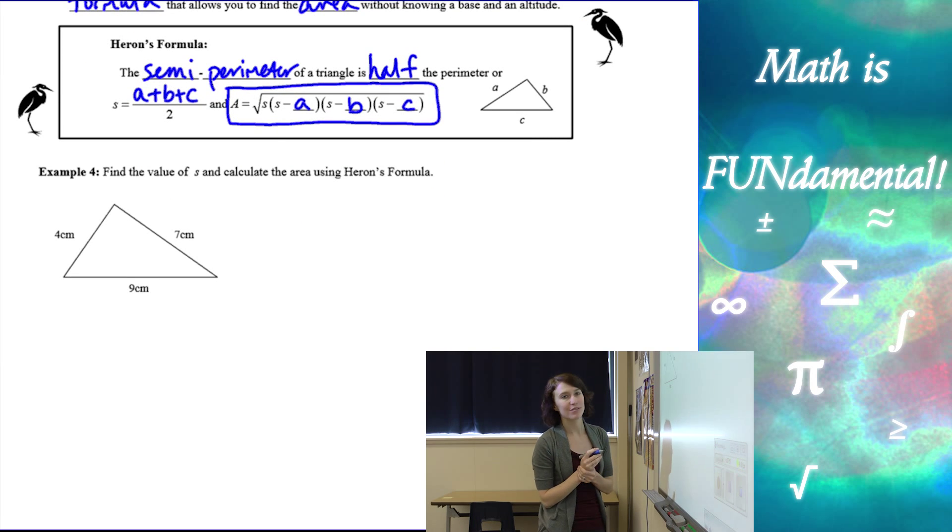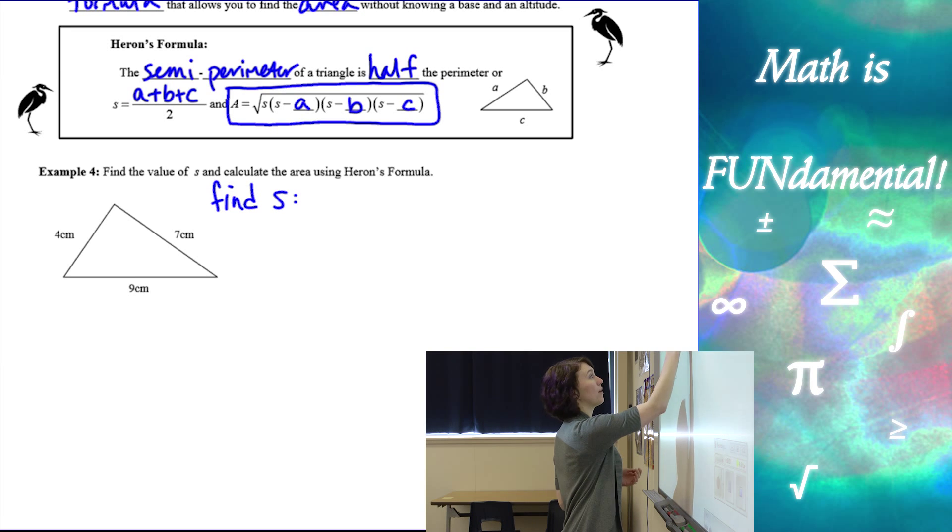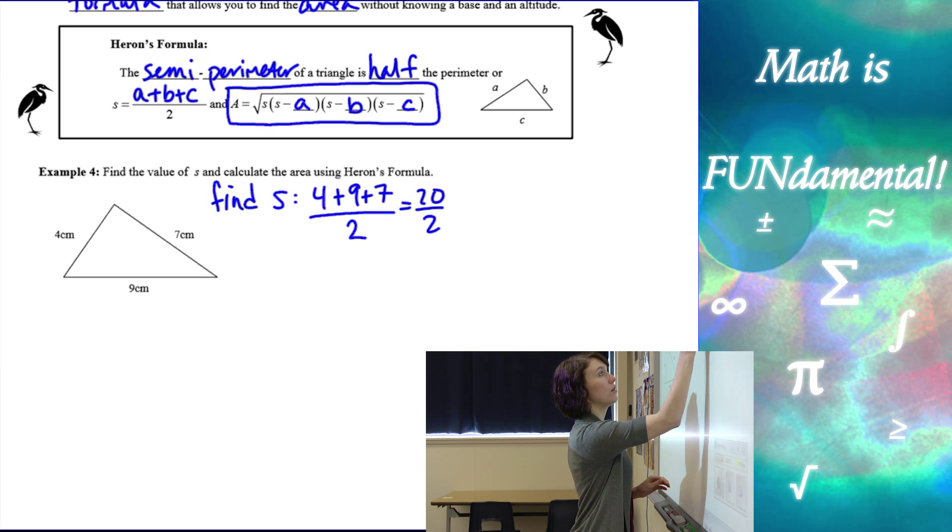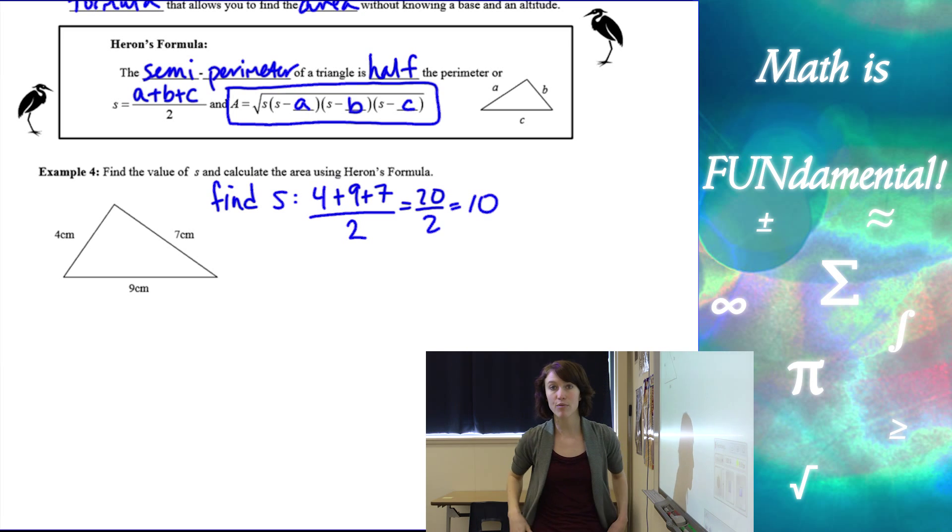So let's apply this to an example and see how it works. So first what I need to do is I need to find S. So S is going to be the semi-perimeter, four plus nine plus seven, all divided by two. So that's 20 divided by two, which is 10. So my semi-perimeter for this example is going to be 10.